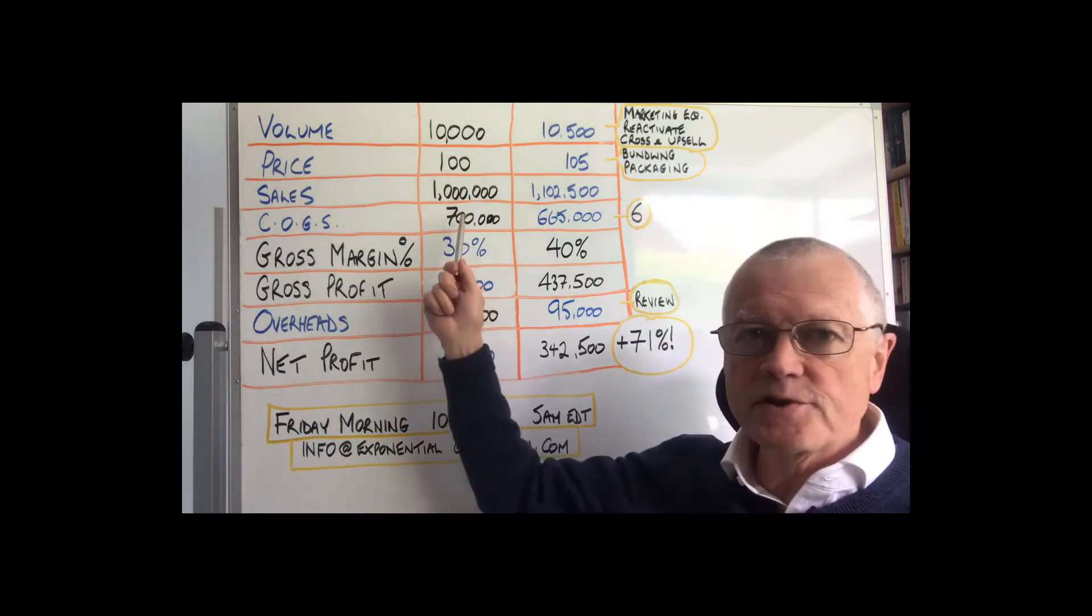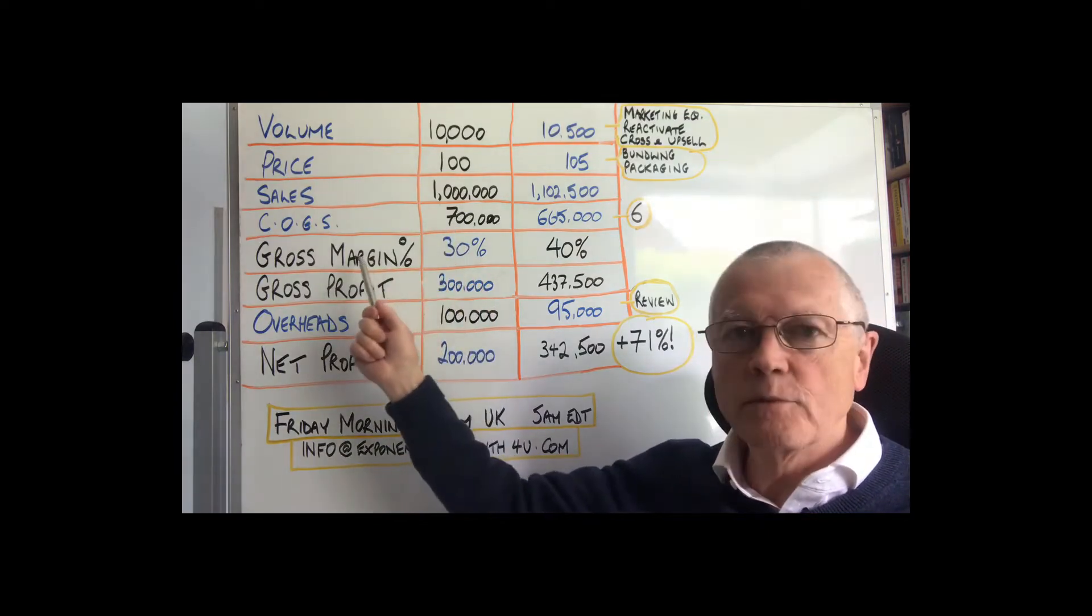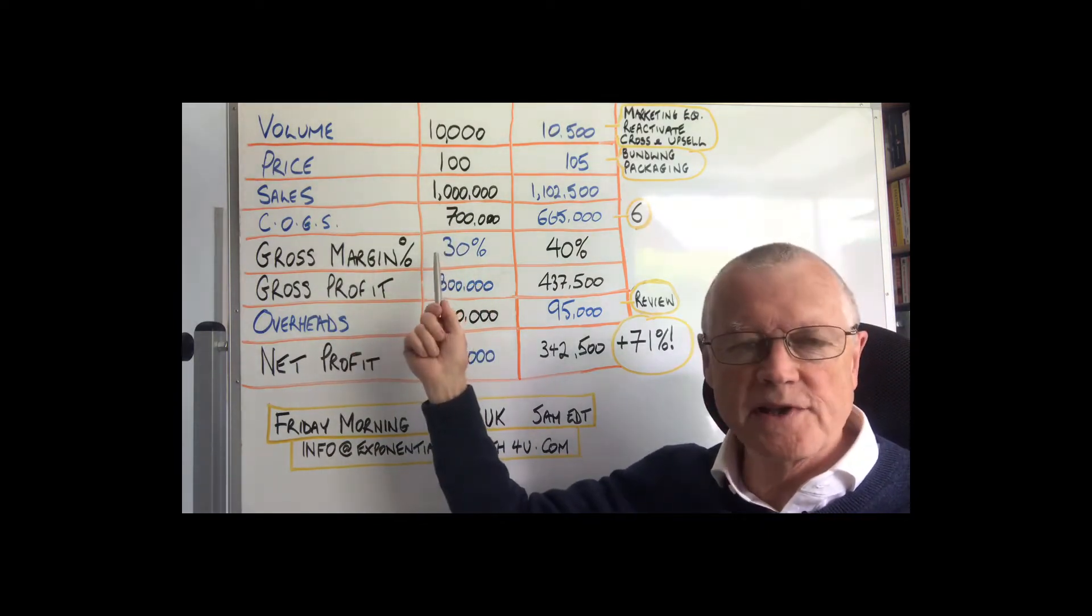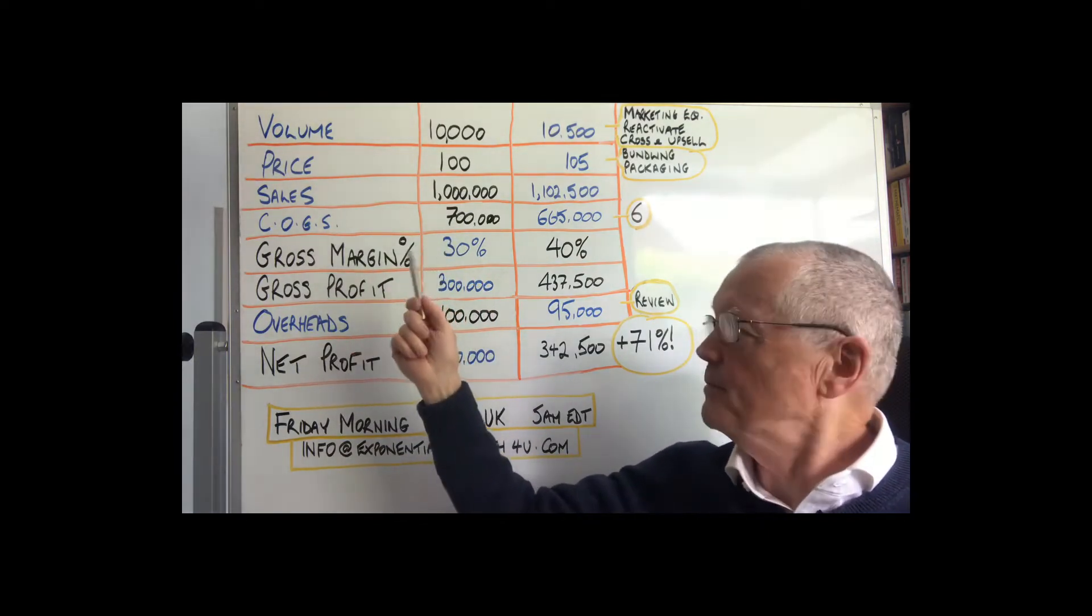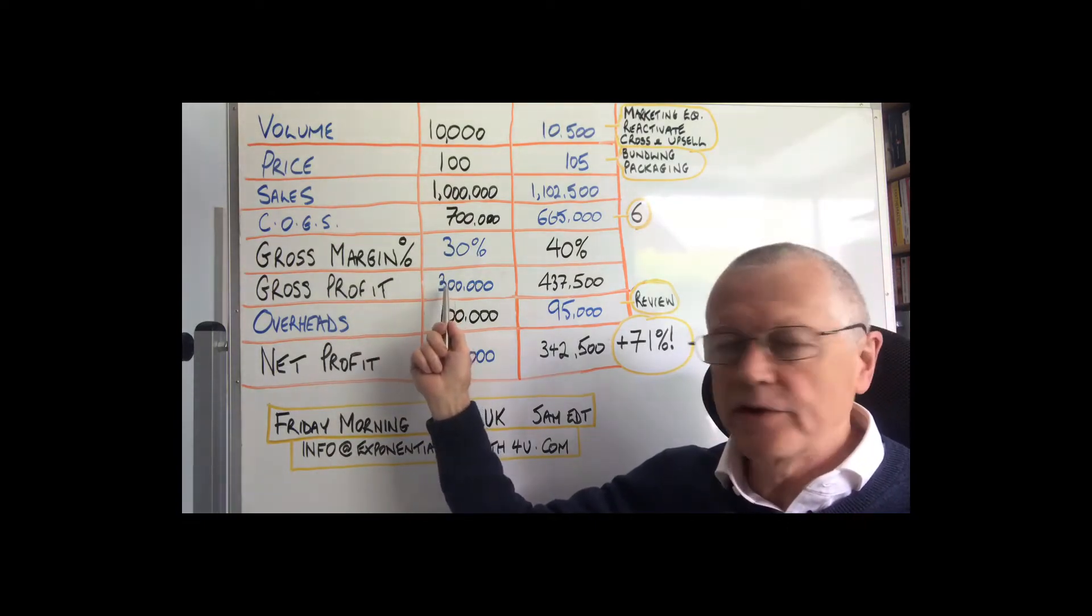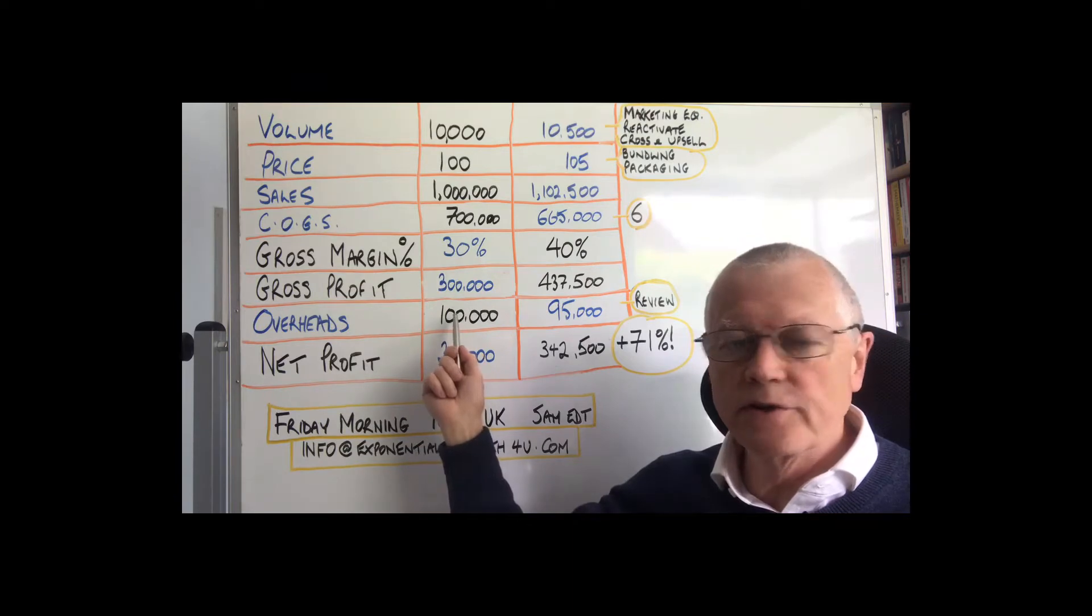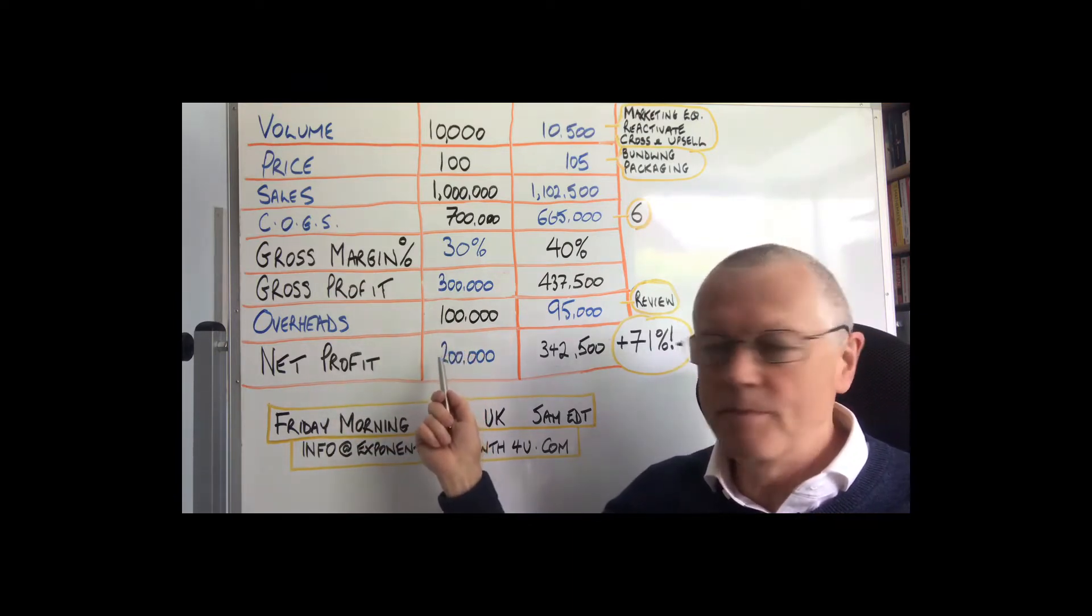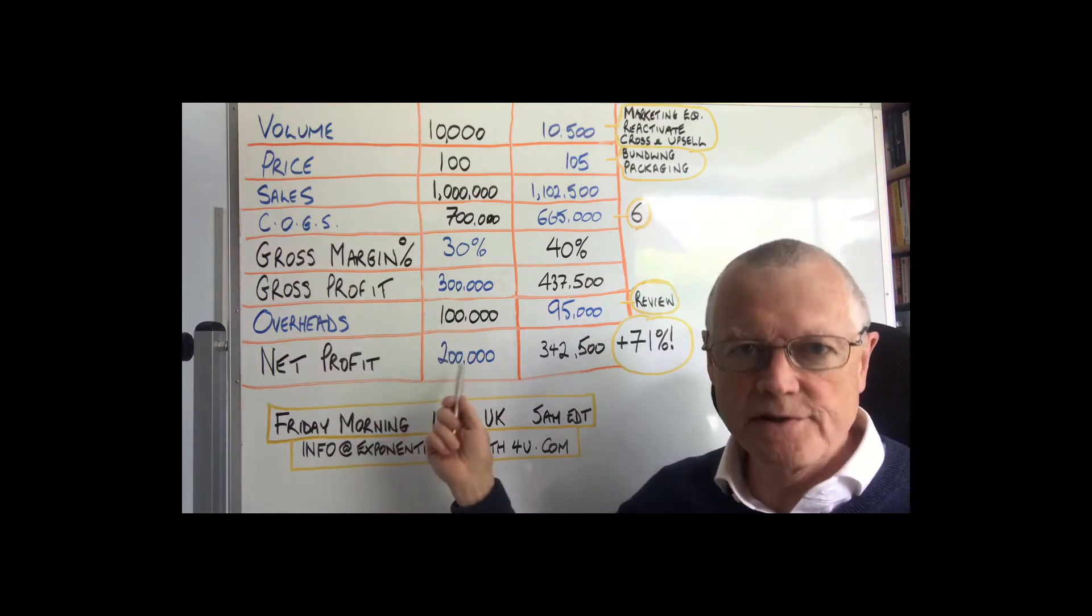If our cost of goods sold are 700,000, that would give us our gross margin of 30%, which is not untypical. So that would therefore mean we'd have a gross profit of 300,000. Our overheads are 100,000, so our net profit, our net margin is 20%, our net profit is 200,000.